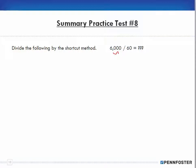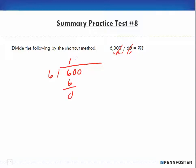Using the shortcut method: we have zeros on the end. If I have one zero on the 60, that means I can take away one zero from the 60,000. So all I have to do is divide 6 into 600, and I end up with the same answer. Six goes into six once, that's zero, bring down the zero — my answer is 100.